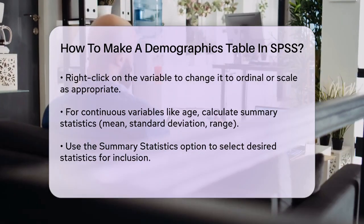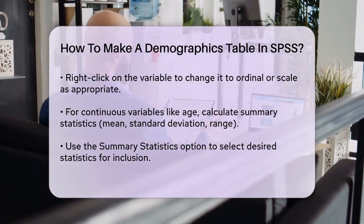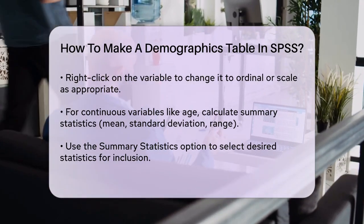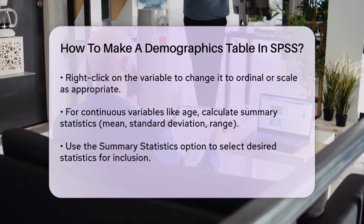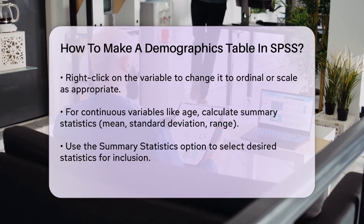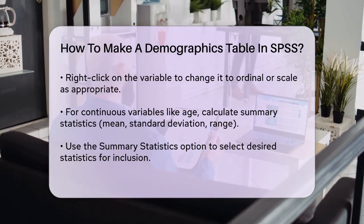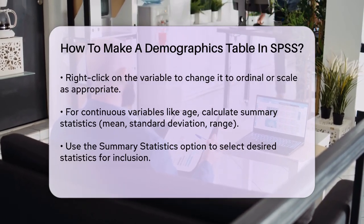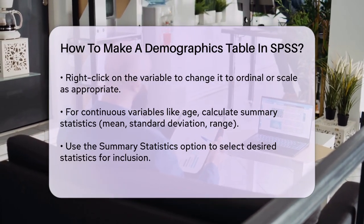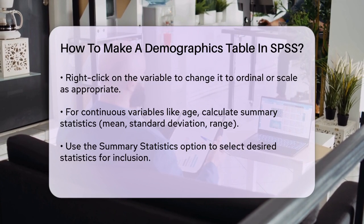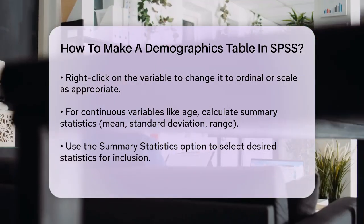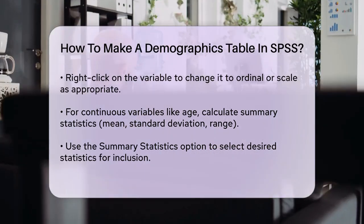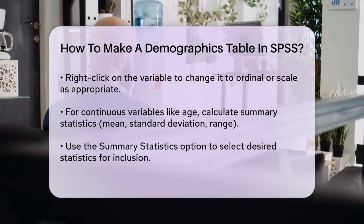If you want to cross-tabulate variables, you can drag a categorical variable into the columns section. For instance, dragging the birth weight class variable into the columns will give you a cross-tabulation with column percentages.